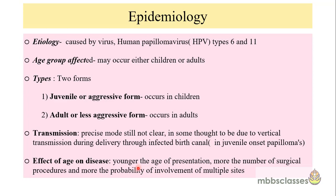Now let's see the epidemiology of the disease. This disease is caused by human papilloma virus type 6 and 11. It affects more commonly children but may affect adults also. There are two types: the first is the juvenile type, which is the aggressive form found in children. The second is the adult type, which is less aggressive than the juvenile type.